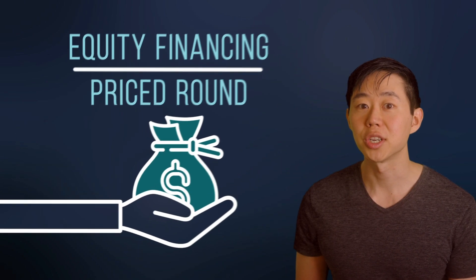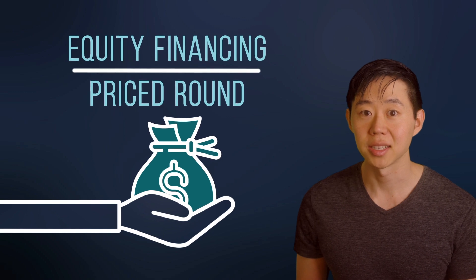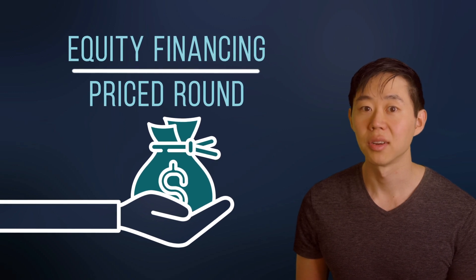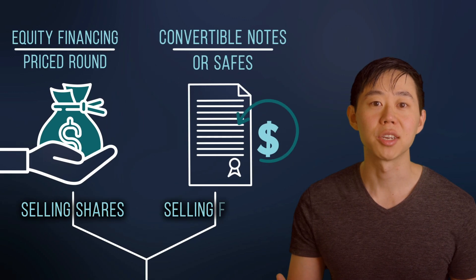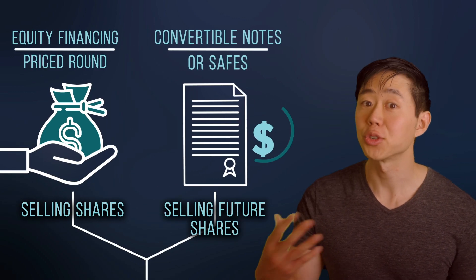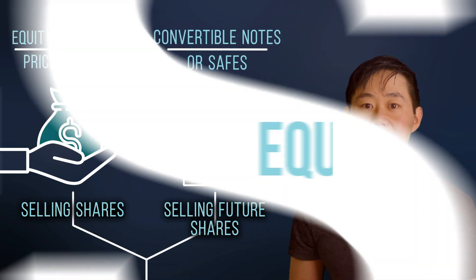When you raise money from venture capitalists, you can do it in one of two ways. You can either sell new shares of your company in what's called an equity financing or price round, or you can sell the right to receive shares in your company in the future through convertible notes such as safes.